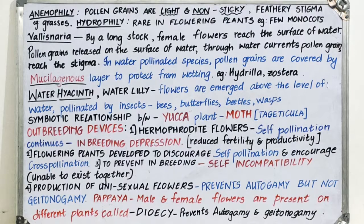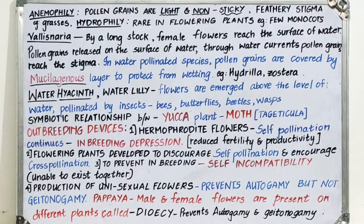Some animals such as birds are also involved in pollination. If pollination takes place by birds, it is called ornithophily. Best examples of such birds are sunbirds and hummingbirds, along with other birds that are also involved in pollination.